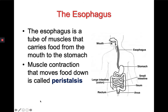The next part of the digestive system is the esophagus. The esophagus is a tube of muscles that carries food from the mouth to the stomach. Muscle contraction moves this food down, and that muscle contraction is called peristalsis.